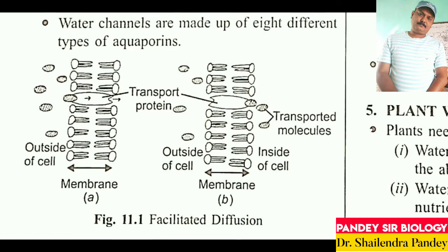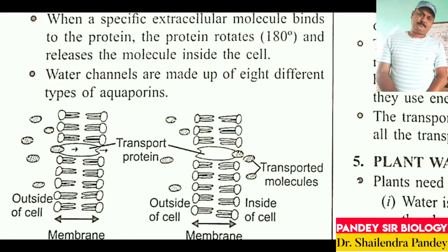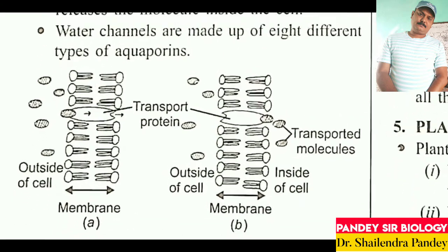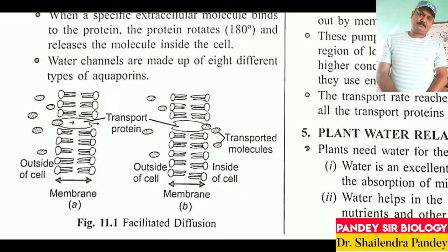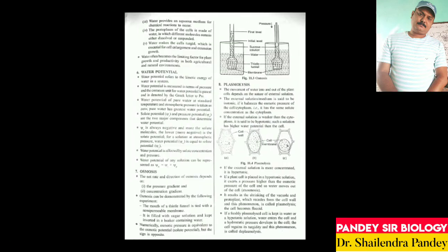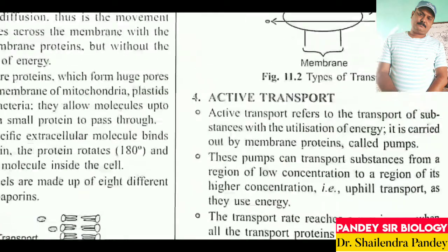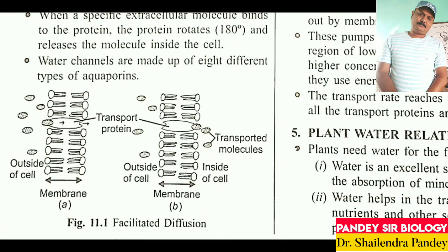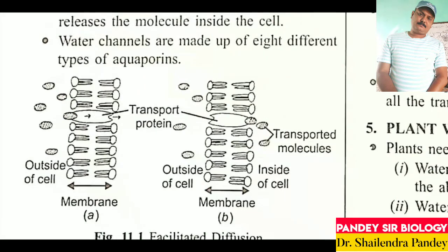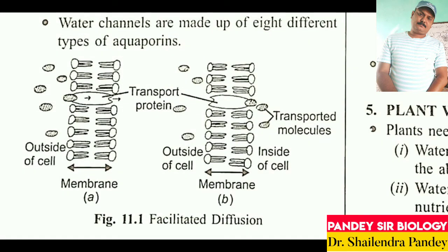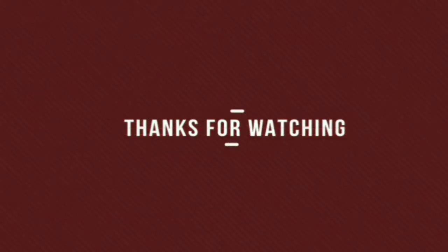There are three types of facilitated diffusion: uniport, symport, and antiport. Uniport: when a transmembrane protein allows a molecule to pass through independently of any other molecule, it is called uniport. Symport: when a transmembrane protein allows two different molecules to pass through simultaneously in one direction.